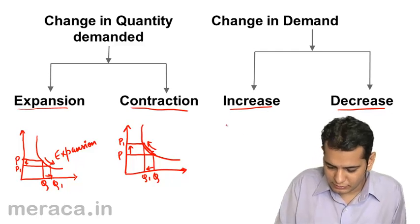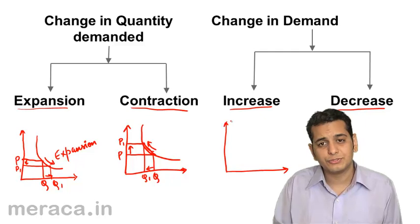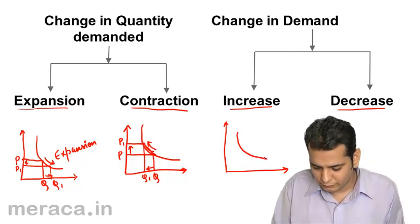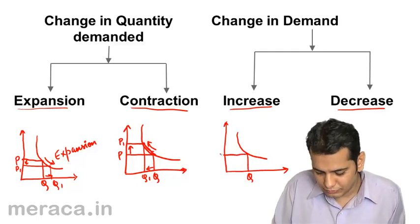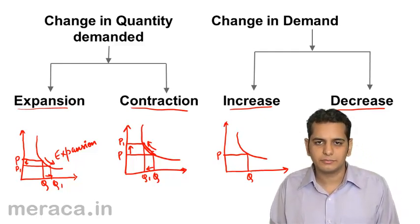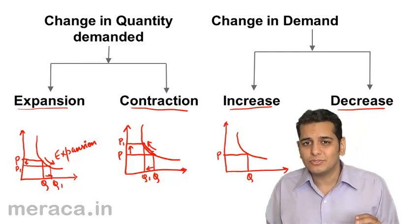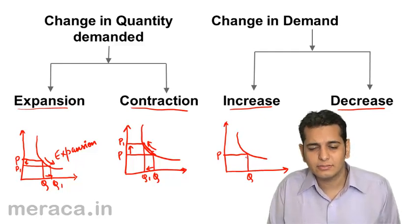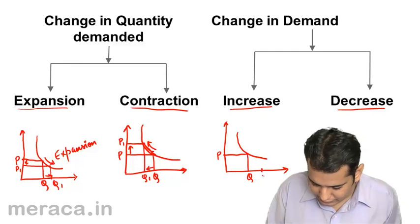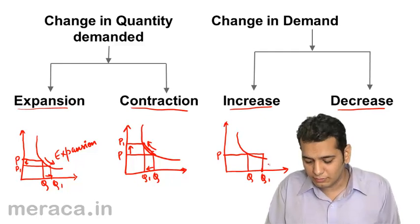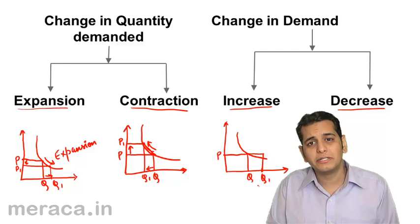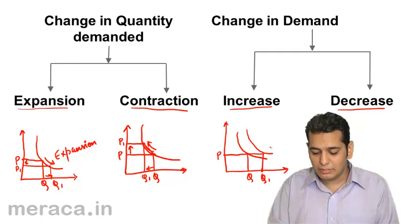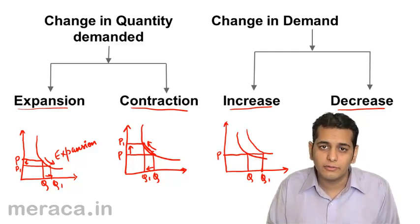Because of these other factors, the demand curve cannot move along the same curve — instead it altogether shifts to a new curve. Here is the normal demand curve, showing quantity demanded on one axis and price on the other. Now, demand changes because of other factors and not because of price, so we keep the price constant. Yet there is a change in demand — let's say demand increases to Q1. Please note there is no change in price, yet the quantity demanded has increased.